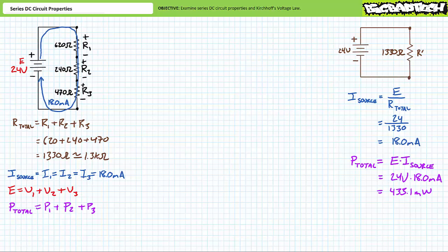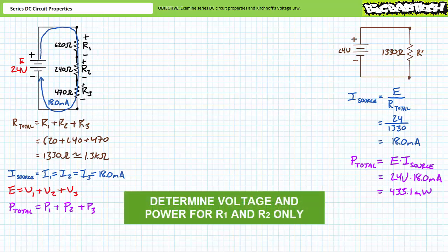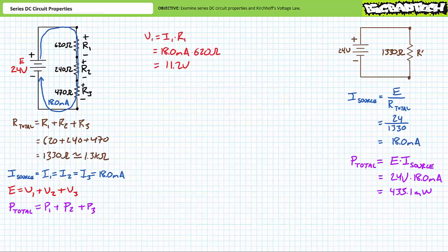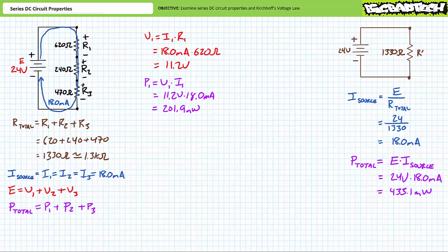Let's see if our predictions come true. Use Ohm's law and the power equations to solve for the voltage drop across and the power dissipated by R1 and R2 only. The voltage drop across R1: V1 equals I1 times R1. R1, by virtue of being in a series circuit, carries roughly 18 milliamps. Substituting our given values demonstrates V1 to be roughly 11.2 volts. The power dissipated by R1: P1 equals V1 times I1, which demonstrates R1 dissipates roughly 201.9 milliwatts of power.